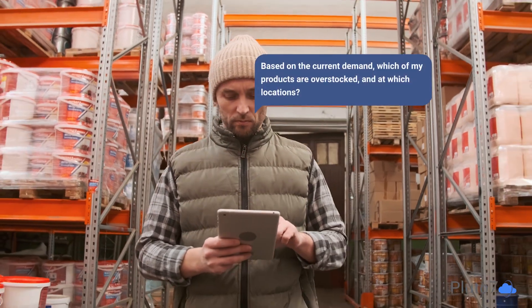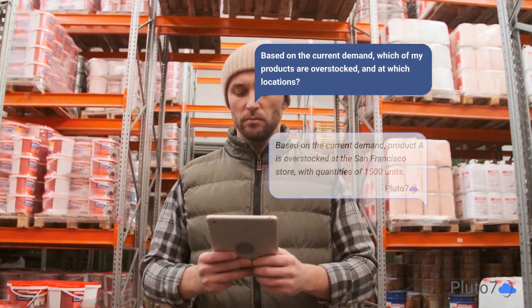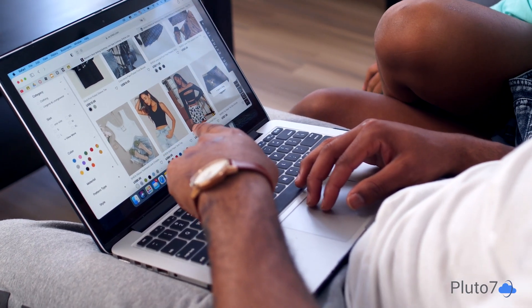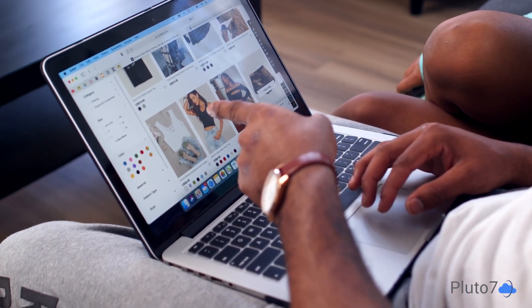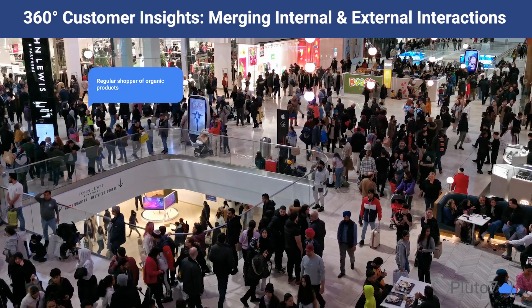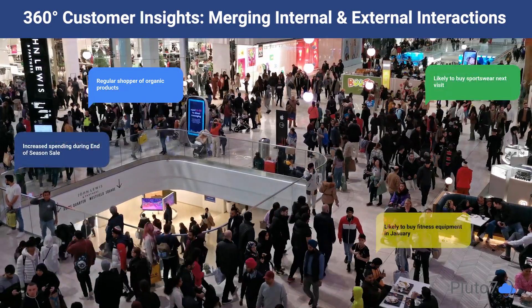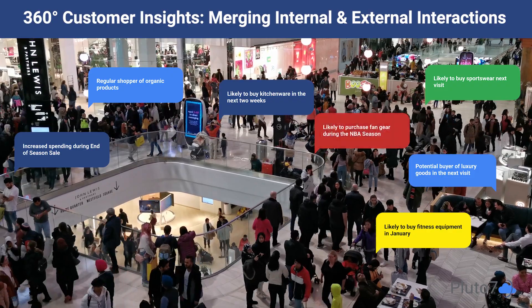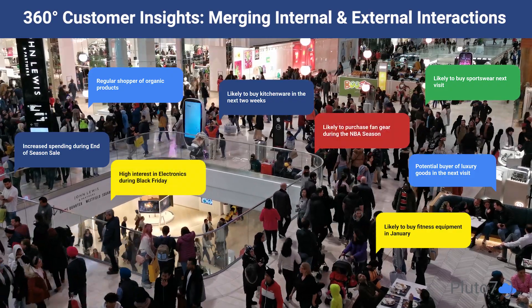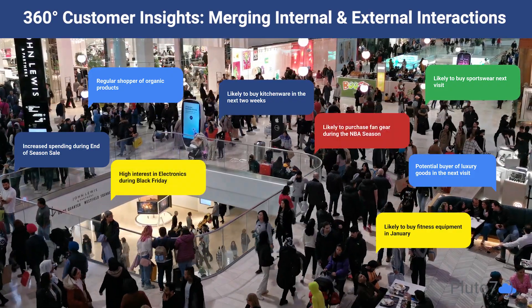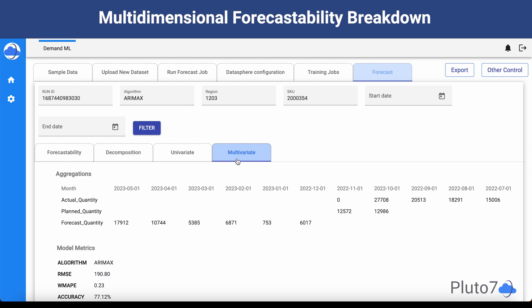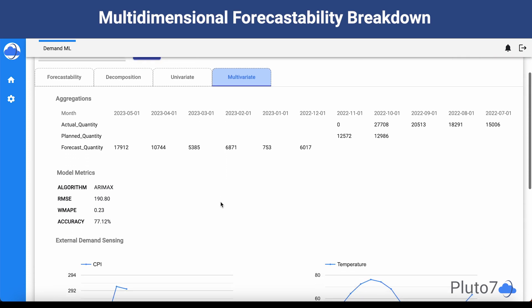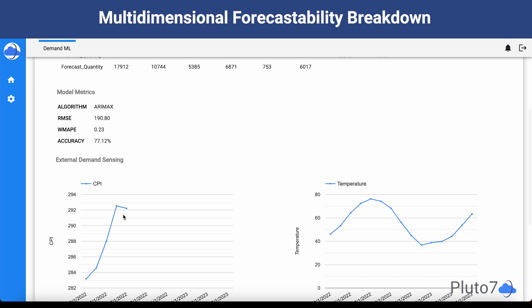How does your supply chain anticipate and react to these shifting demand patterns? What happens when your competitor launches a massive discount campaign? What if there was a tool that could instantly integrate these signals into your forecast — a tool that keeps you ahead of the curve, delivering dynamic recommendations for your business? Welcome to DemandML, Pluto7's Generative AI solution to forecast uncertainty.